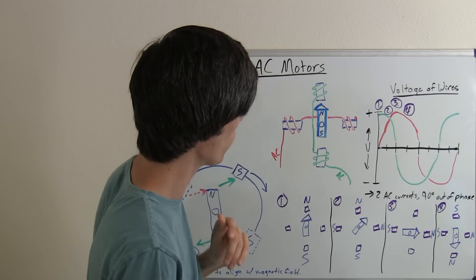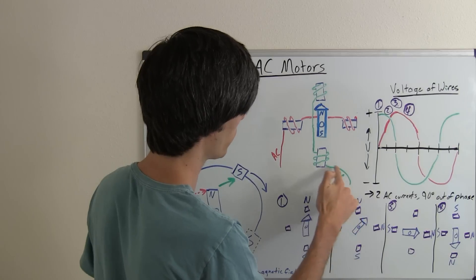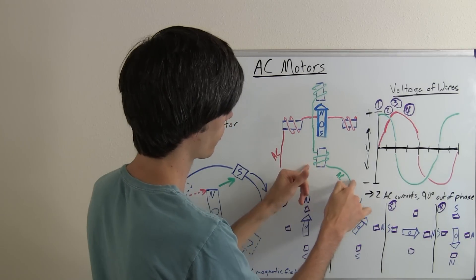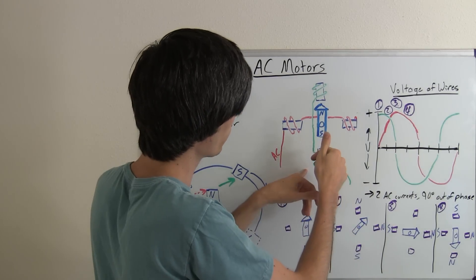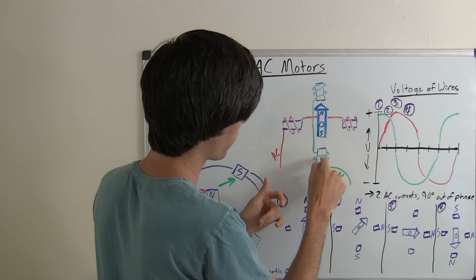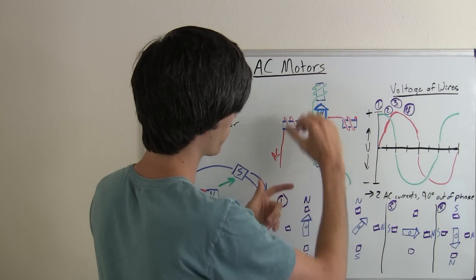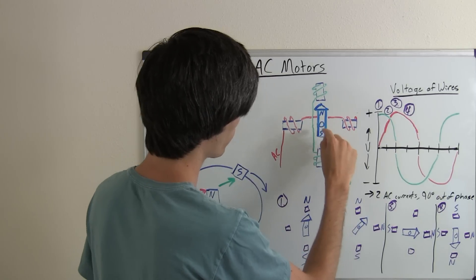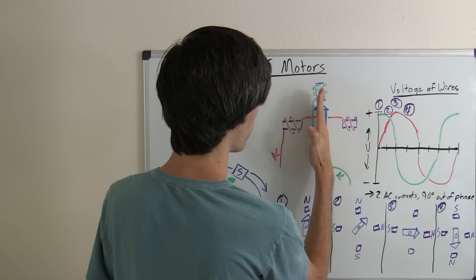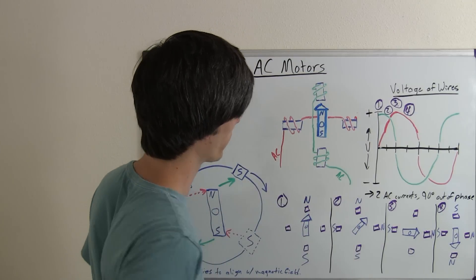So in step one, we're going to say that we've got a positive current coming in through this wire. And so what that does is, that means this is north, this is south of this electromagnet, this is north, this is south of this electromagnet, so the magnet in the center that's on a pin, the permanent magnet, is going to align itself with those two electromagnets.